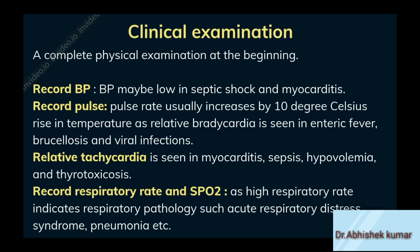Now moving on to clinical examination — a complete physical examination at the beginning. Record BP: BP may be low in septic shock and myocarditis. Record pulse: pulse rate usually increases by 10 beats per minute per degree Celsius rise in temperature; relative bradycardia is seen in enteric fever, brucellosis and viral infections. Relative tachycardia is seen in myocarditis, sepsis, hypovolemia and thyrotoxicosis. Record respiratory rate and SpO2, as high respiratory rate indicates respiratory pathology such as acute respiratory distress syndrome, pneumonia, etc.